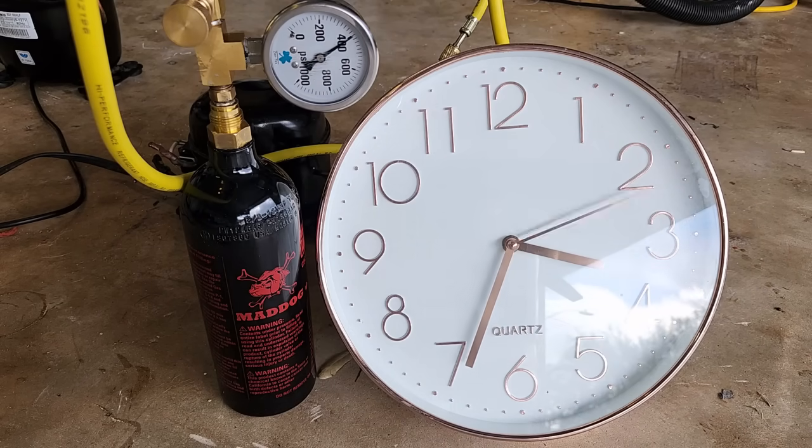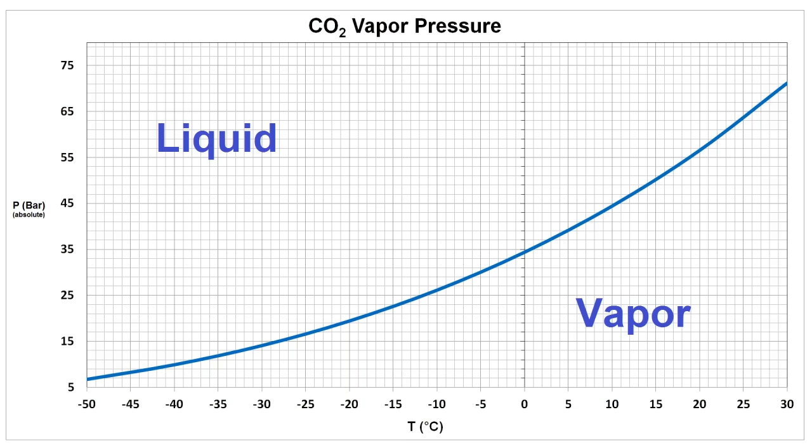We can actually still make this work, but it's going to require a lower temperature. If I put the high pressure tank in an ice bath while I'm filling it, I can drop the temperature down to zero°C and if we look at the vapor pressure curve again, zero°C calls for about 35 bar of pressure to condense CO2, which is right at 500 psi. I think I can still pull this off.